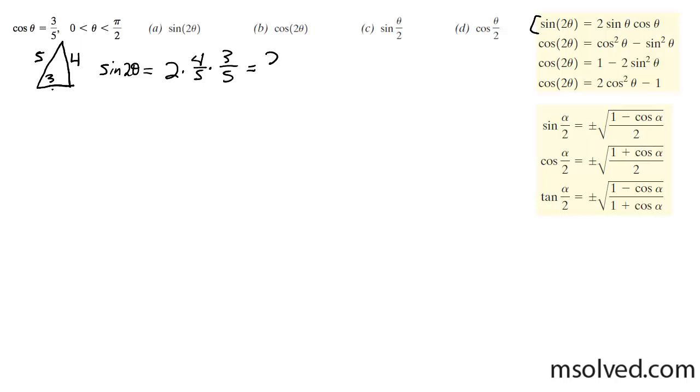This ends up being equal to 2 times 4 times 3, all over 5 times 5, which ends up being equal to, excuse me, 2 times 4 times 3, which is 24 over 25.